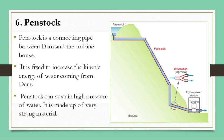The sixth important component is the penstock. The penstock is a connecting pipe between the dam and the turbine house. The dam is constructed on the uphills whereas the powerhouse or turbine house is located on the downhills. The penstock is fixed to increase the kinetic energy of water coming from the dam, because more kinetic energy means greater ability to rotate the turbine blades, which in turn generates more electricity. The penstock can sustain high pressure of water and is made of very strong material.